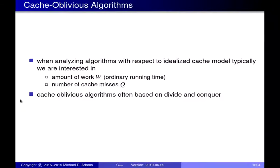I introduced the notion of cache-oblivious and cache-aware algorithms. In this course, we're going to be focusing predominantly on cache-oblivious algorithms. When analyzing cache-oblivious algorithms, we often use the idealized cache model because the analysis is asymptotic in nature and therefore well justified. Typically we're interested in two things: the amount of work — the ordinary running time — and the number of cache misses. One important comment about cache-oblivious algorithms is that many of them are based on divide and conquer.